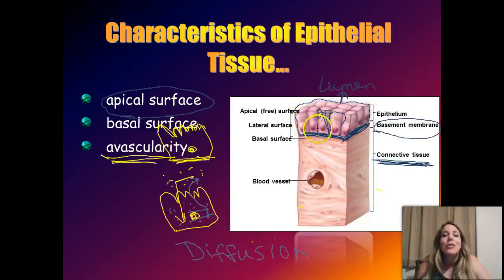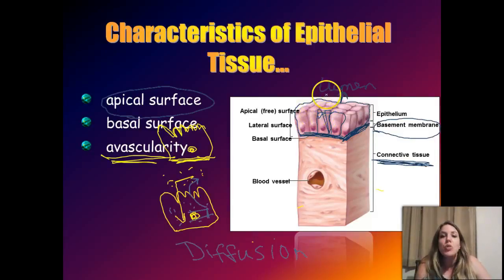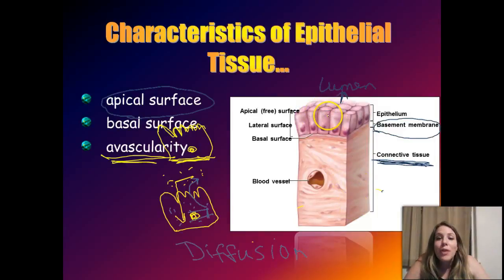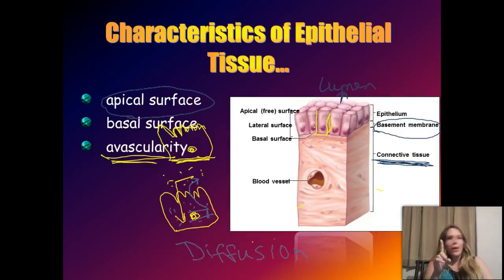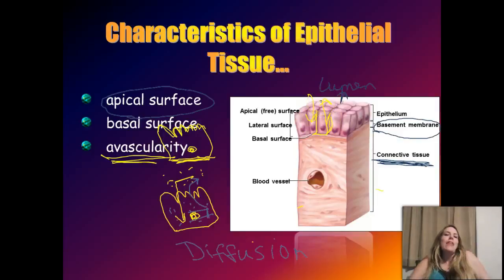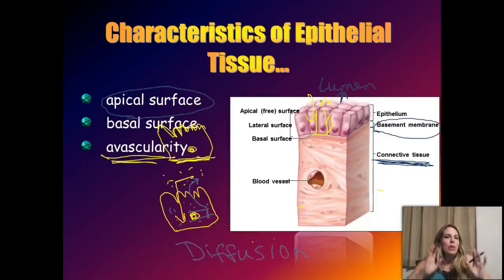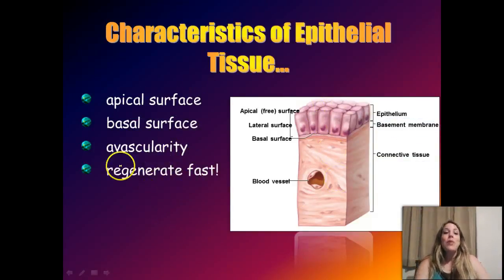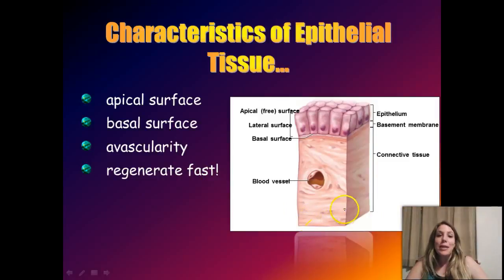Epithelial cells use diffusion to move nutrients and waste in and out through the apical surface. The good thing is that because these cells are so tightly packed together, the only way things can go in and out of the cell is through the apical surface. This really helps with protection and selective permeability — cells can choose what goes in or out, and stuff won't just leak through the sides.